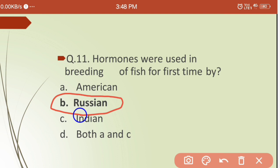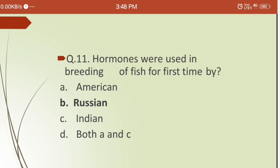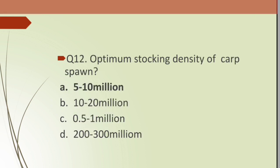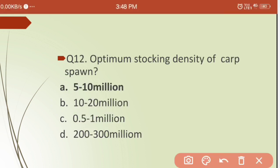Twelfth question: what is the optimum stocking density of carp spawn? Options are: (a) 5–10 million, (b) 10–20 million, (c) 0.5–1 million, (d) 200–300 million. The correct answer is (a) — the optimum stocking density of carp spawn should be 5 to 10 million.